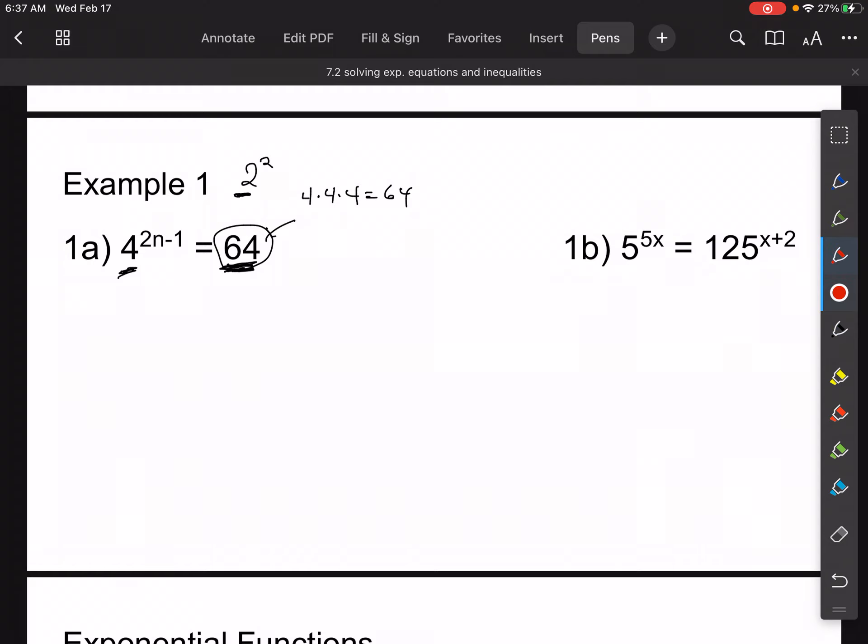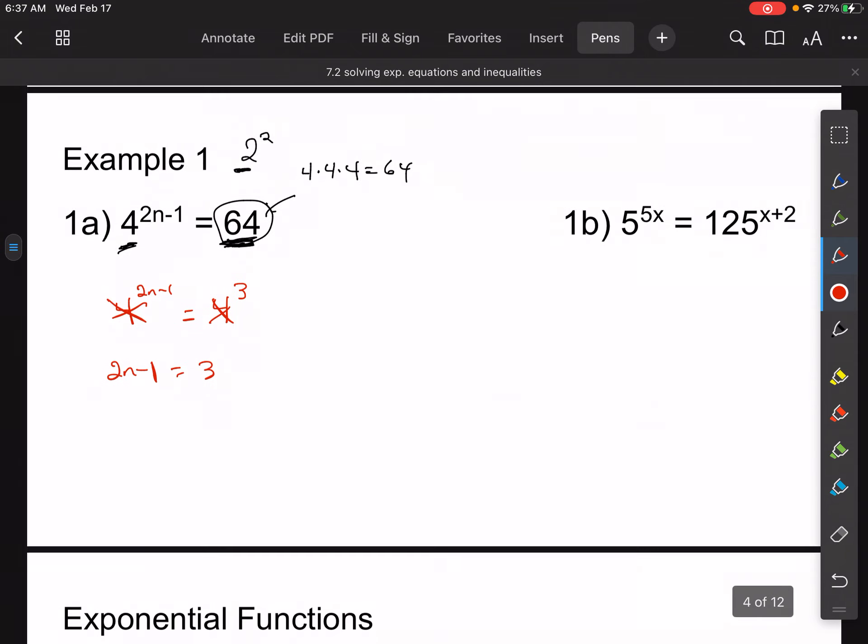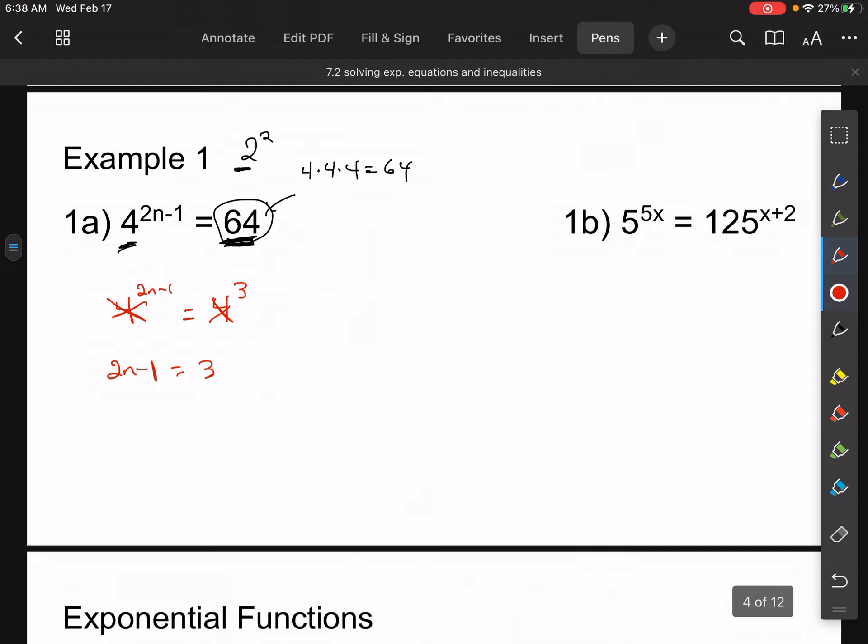So what I'm going to do is I'm just going to rewrite this in terms of 4. This one is already in terms of 4, but I'm going to write 64 as 4 to the third power. Now that I've done that, I can get rid of these bases and just say 2n minus 1 is equal to 3. It has to be by the rule that we just talked about. So if I do a little bit of algebra here, I get 2n is equal to 4, so then n is equal to 2. And I'm done with that.